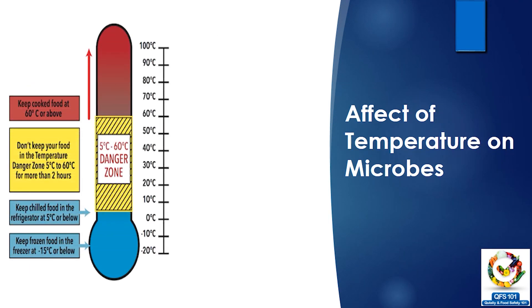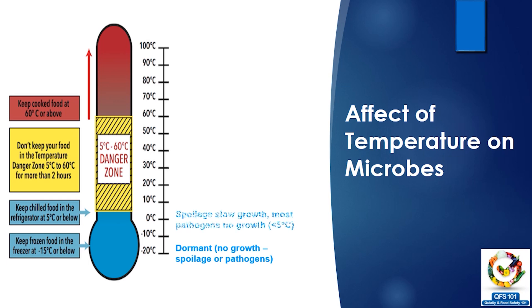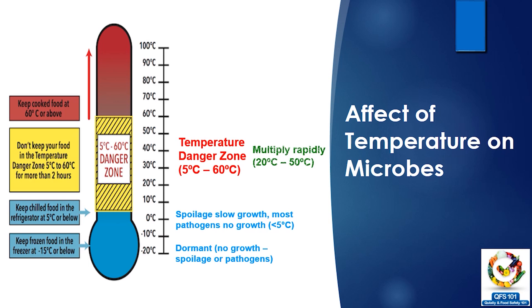This diagram shows what happens to microorganisms at different temperatures. At lower temperatures, below or around zero, microorganisms do not grow because they are dormant. Around zero to five degrees there is very slow growth, and mainly spoilage microorganisms can grow at that temperature. Pathogens do not grow below five degrees Celsius. From five to sixty degrees is called the danger zone, where microorganisms can grow very fast, causing food spoilage or increasing their numbers if they are pathogens and later causing disease.